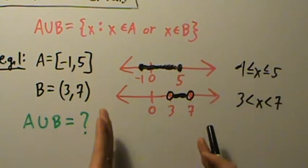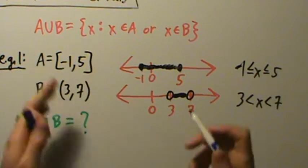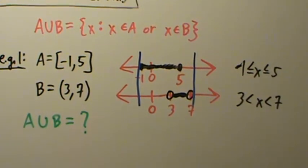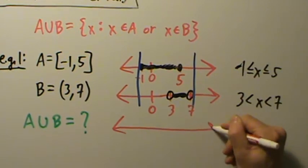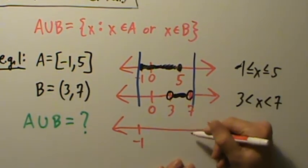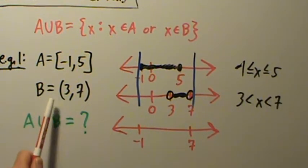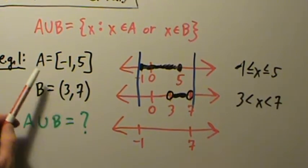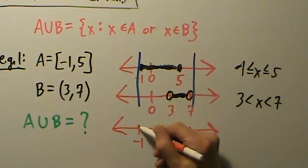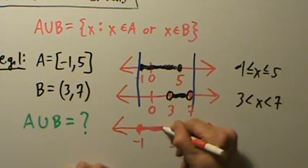Now for the union — remember, the union is everything that's in A or B or both. The key technique is to line the two number lines up, then take the farthest point to the left and the farthest point to the right, and drop them down onto a new number line. The farthest left is -1 and the farthest right is 7.